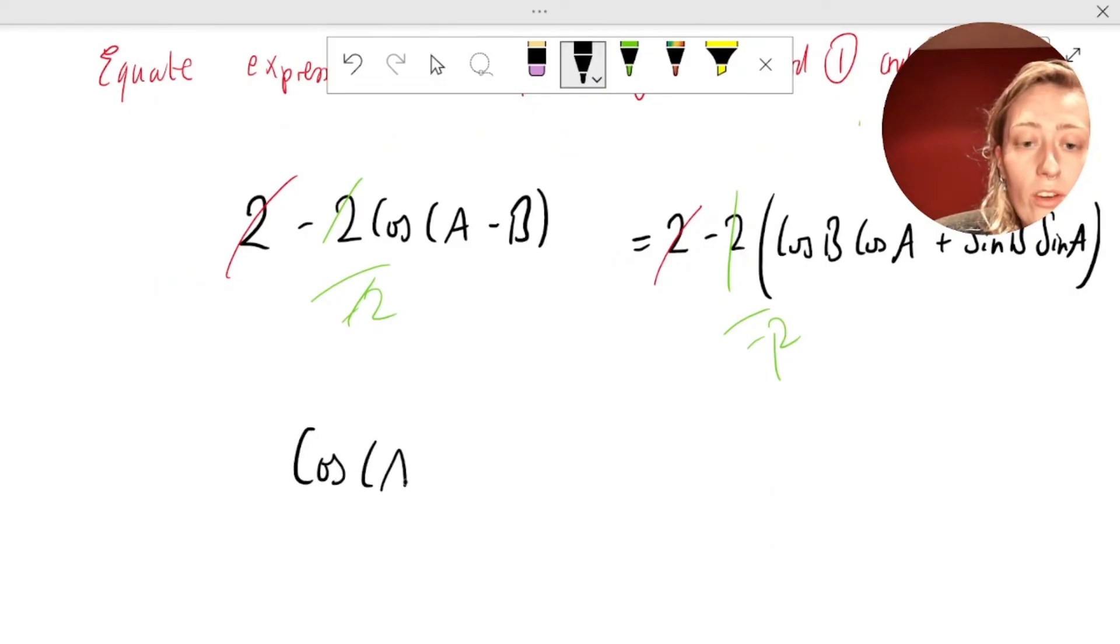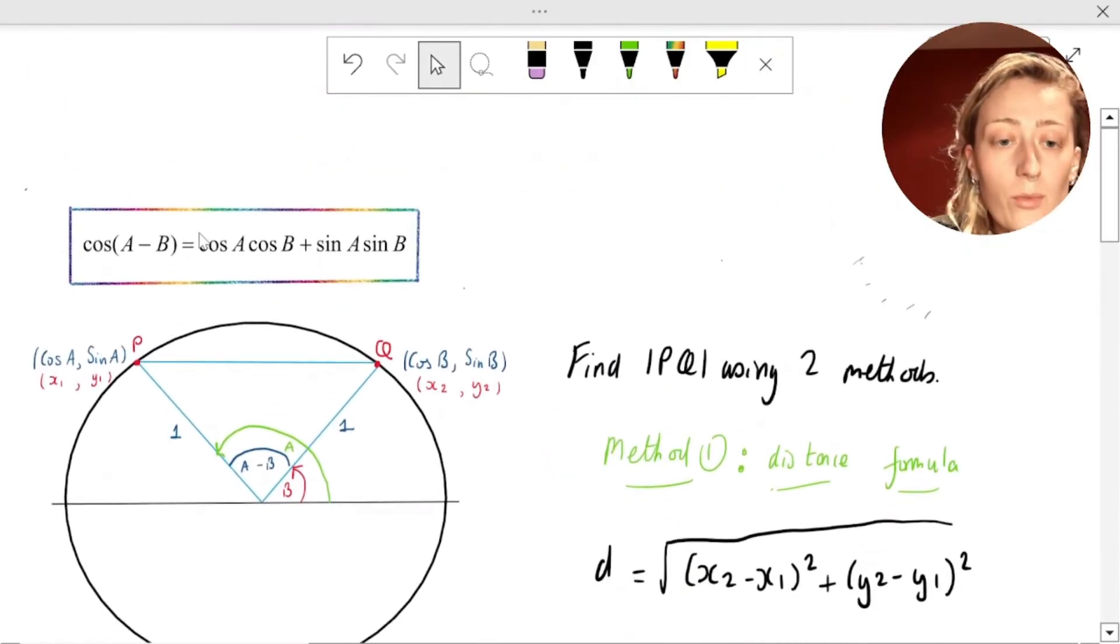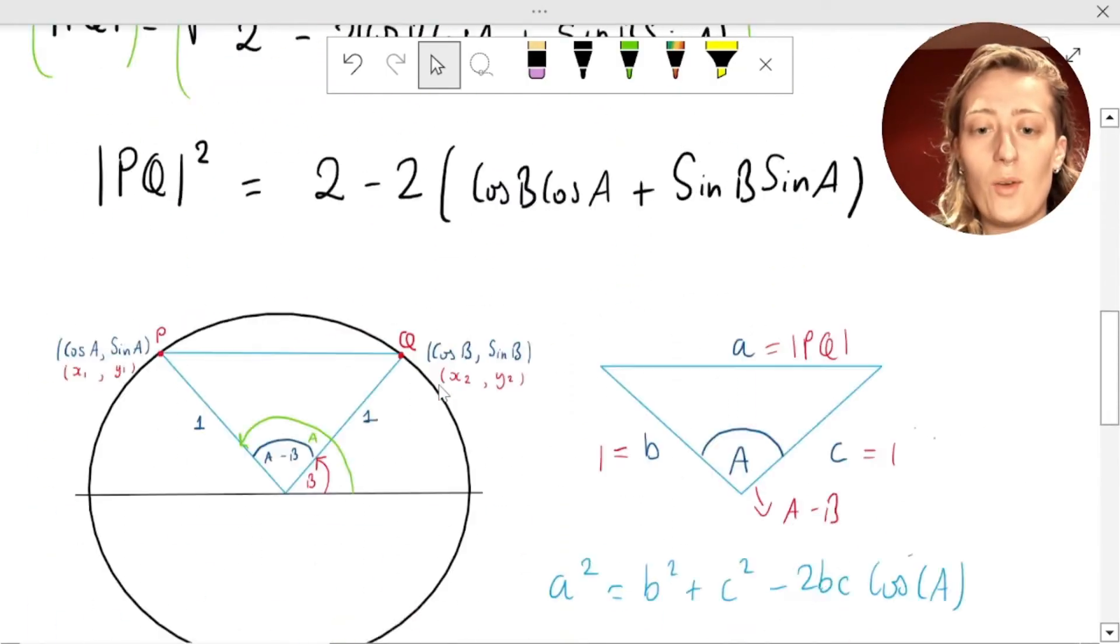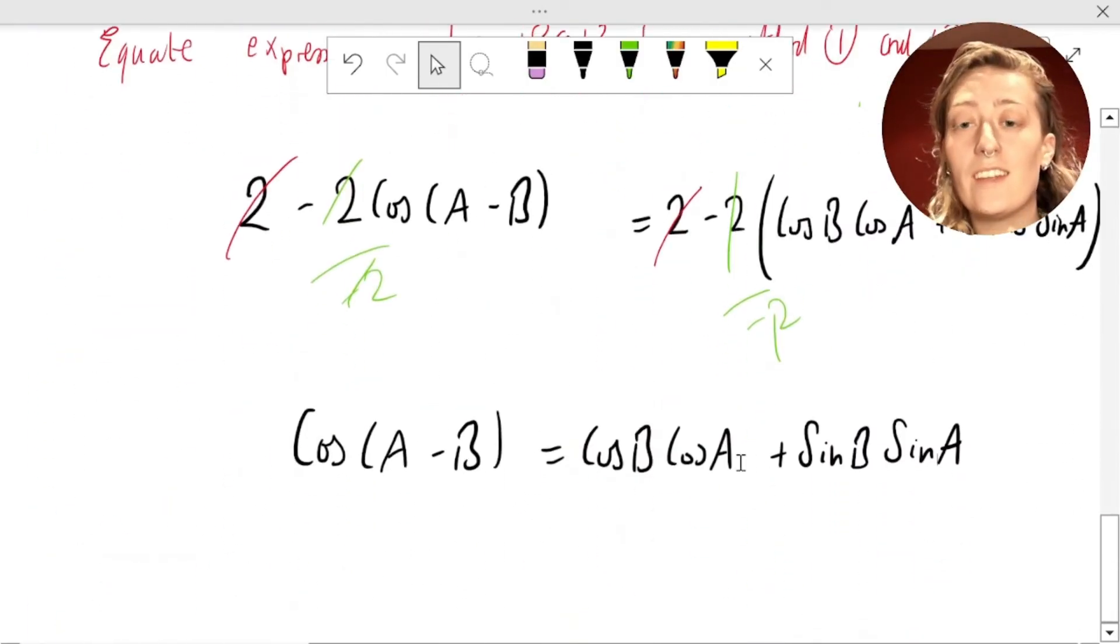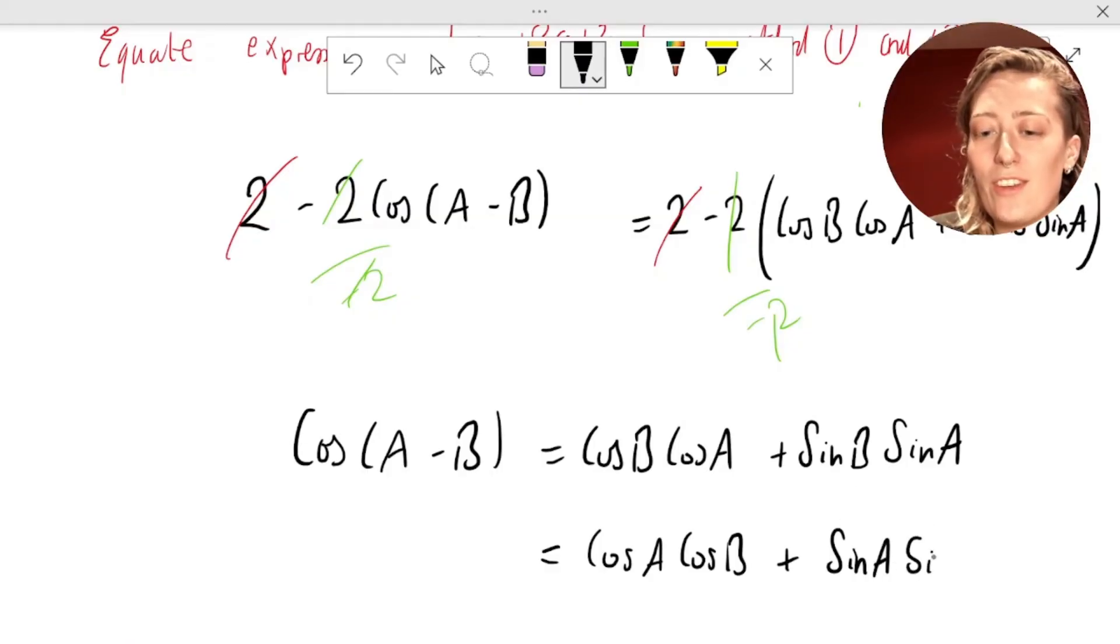And look at what we're left with, exactly what we were trying to prove, that cos A minus B is equal to cos B cos A plus sin B sin A. And you are done. Now, you might notice that the order of this is slightly different to what is given in your log tables, which is cos A cos B sin A sin B. We have cos B cos A sin B sin A. Absolutely fine, doesn't matter, it's the exact same thing, in fact, you can just let it equal. Because these are just multiplied together, so the order doesn't matter. So if we want to be very precise, we can then rearrange it to look like this. And there you have it, guys.